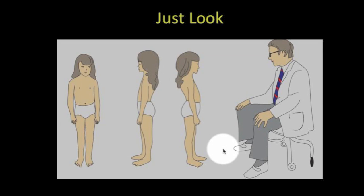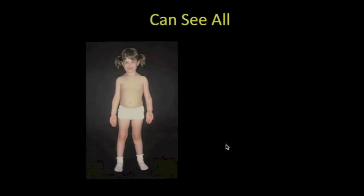The first step is just to look at the child as best you can. Most things can be seen by just looking. For instance, with this child, you can see that there's a short arm on this side, which would never be noticed if you were just looking at the foot.